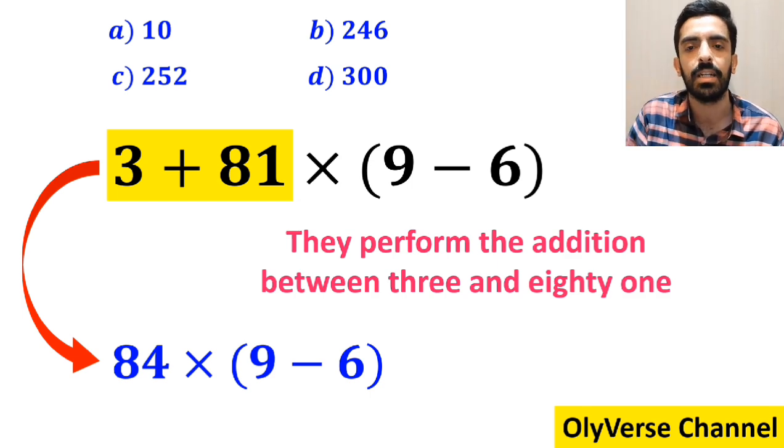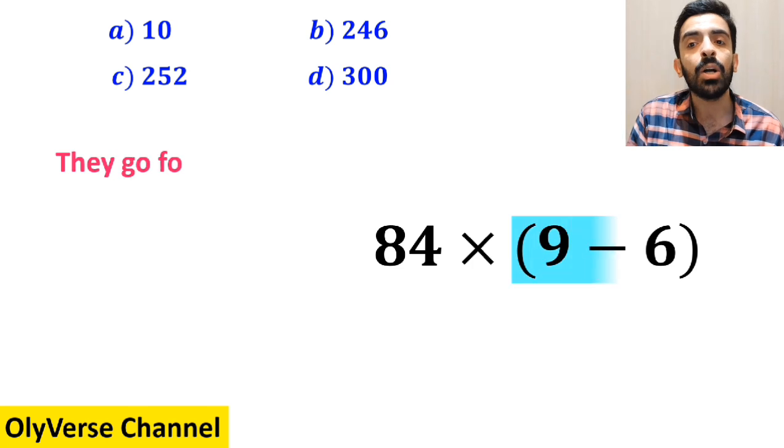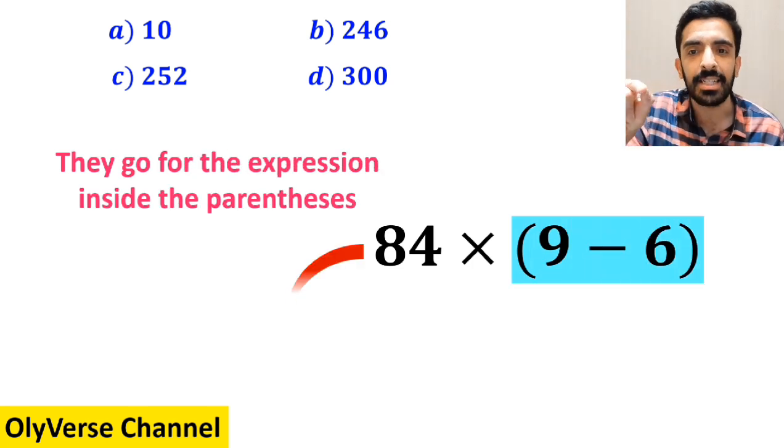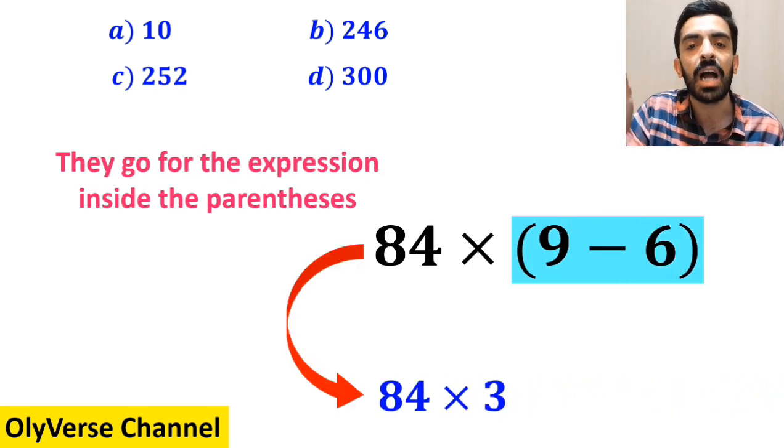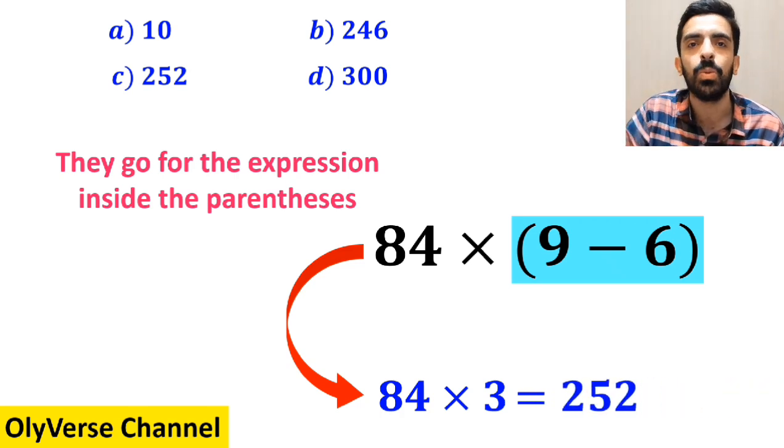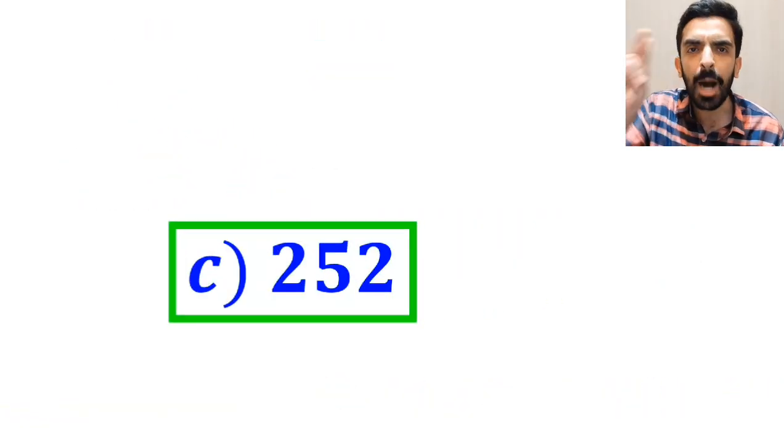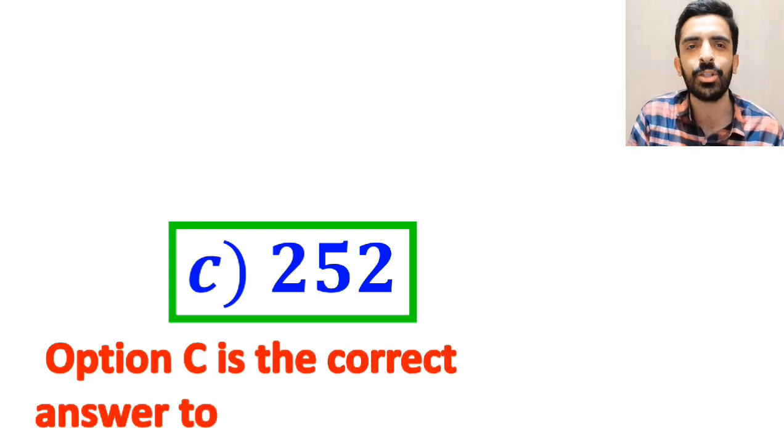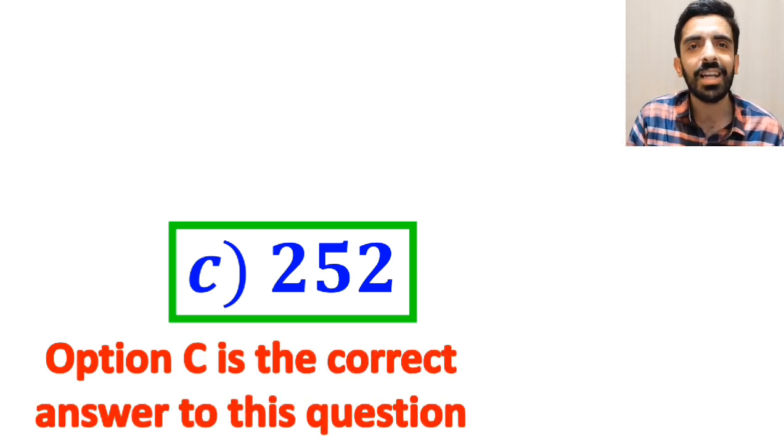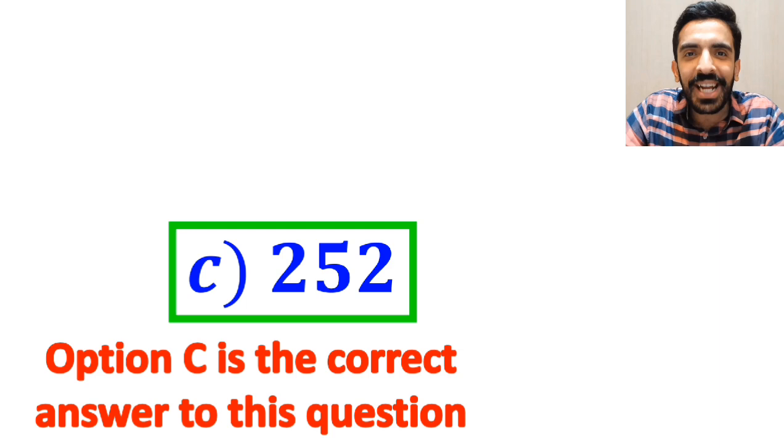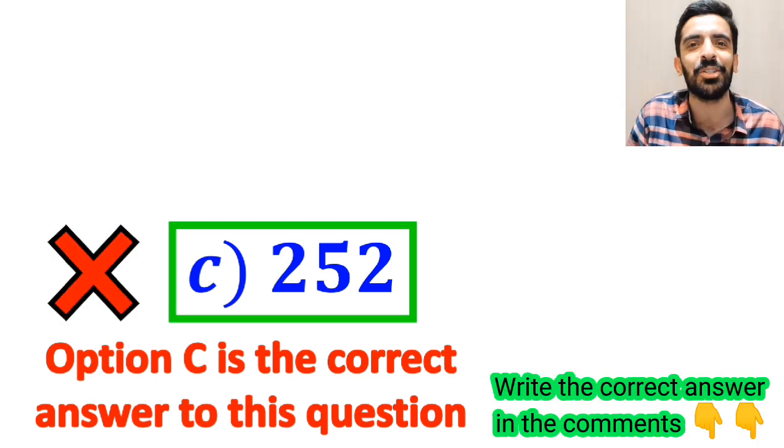In the final step, they go for the expression inside the parenthesis and replace it with 84 × 3, which ultimately gives them the answer 252. Without any hesitation, they quickly say that option C is the correct answer to this question. But I have to say we were tricked, and it's not the correct answer.